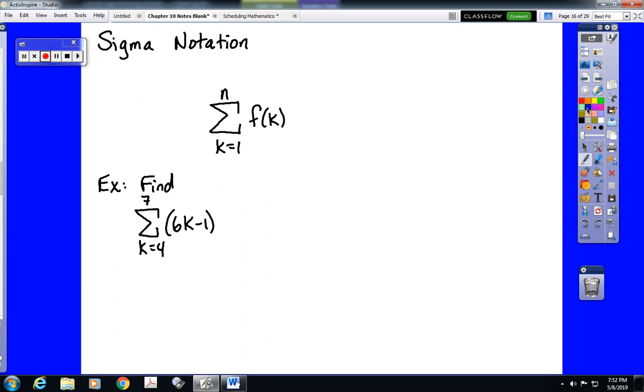First off, it is called sigma notation because this symbol is a capital sigma, which is a Greek letter, and it means sum in mathematics. So what this says to do in words is the sum from k equals 1 to k equals n of f of k. What we would do is plug in every integer from 1 to whatever n is into this function, and then add up all of the results.